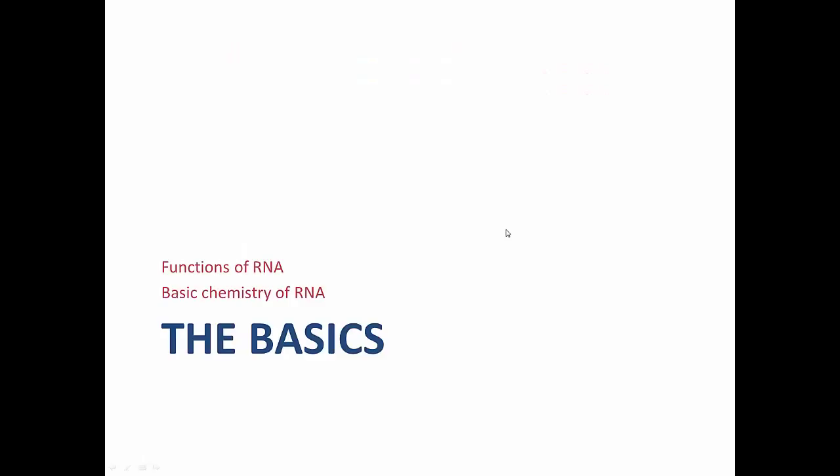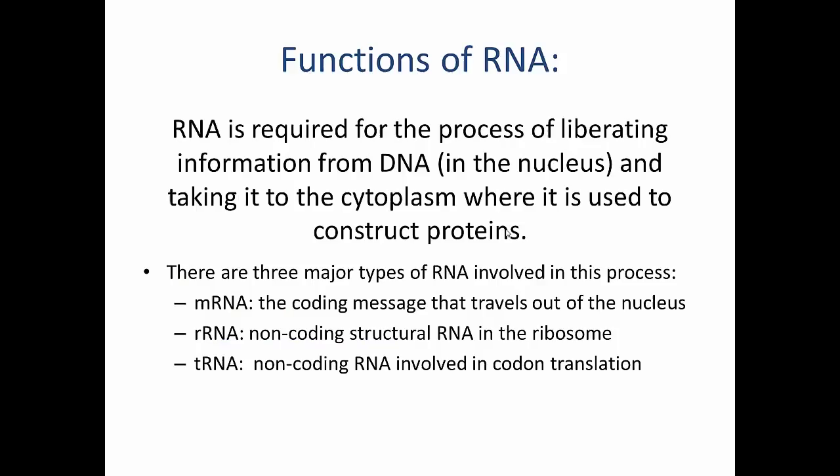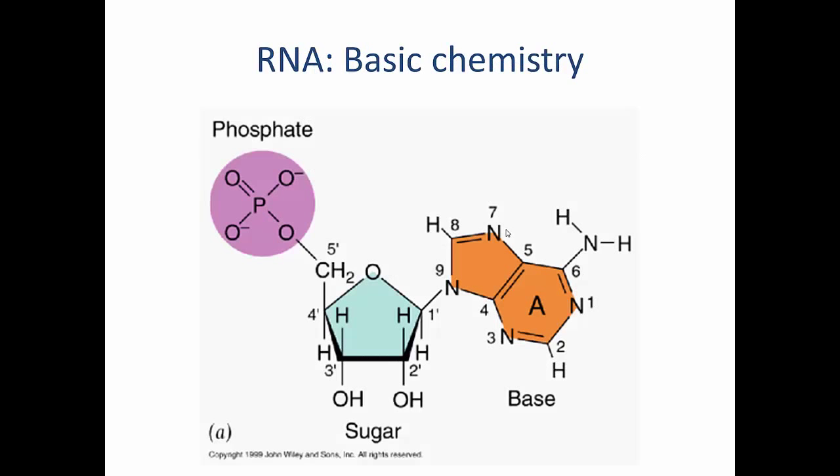First, the functions and chemistry of RNA. There are three major types of RNA in the cell, required for liberating information from the DNA in the nucleus and taking it into the cytoplasm where it can be used to construct proteins. These are mRNA, the coding message that travels out of the nucleus; rRNA, a non-coding structural RNA that forms part of the ribosome; and tRNA, a non-coding RNA involved in codon translation.